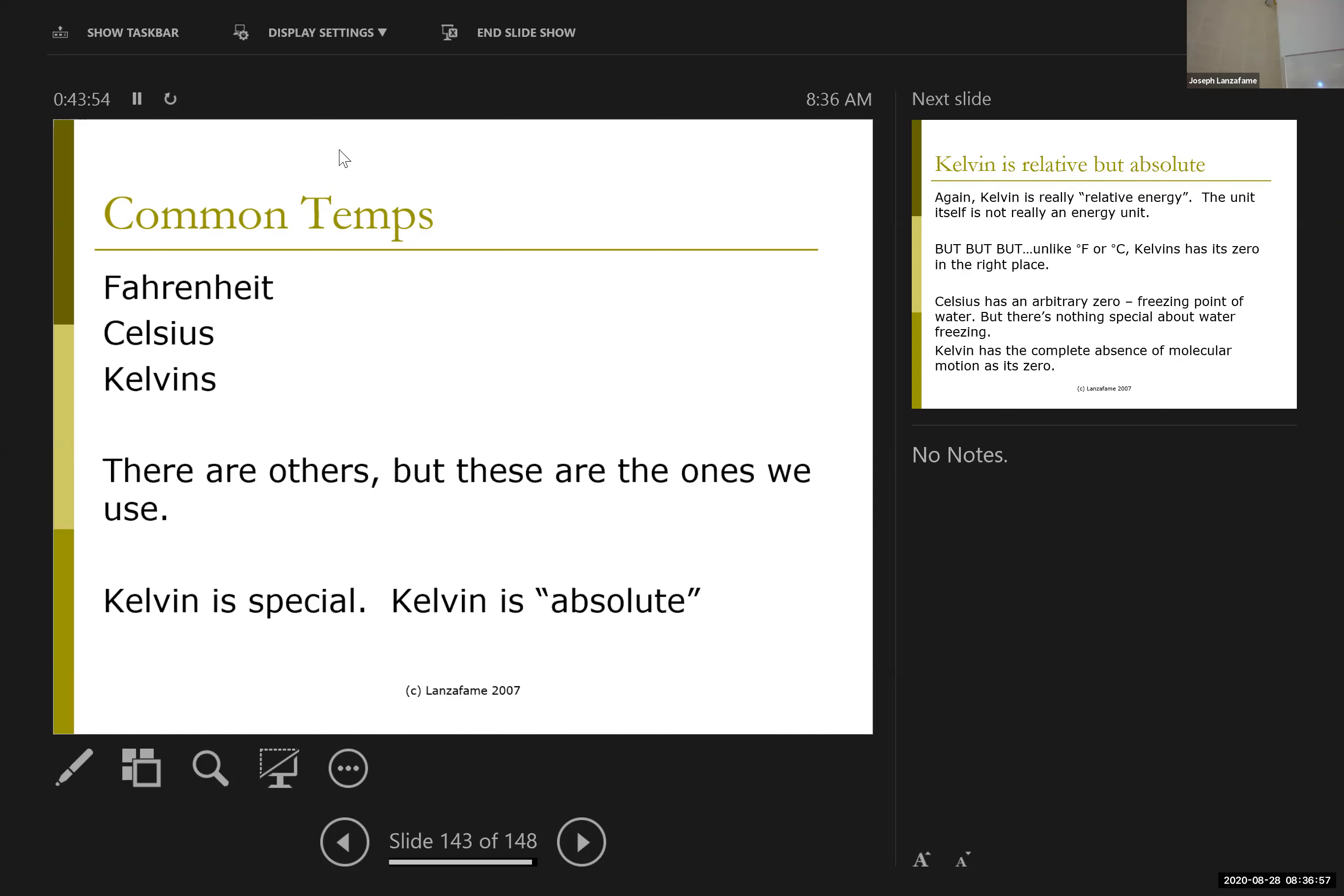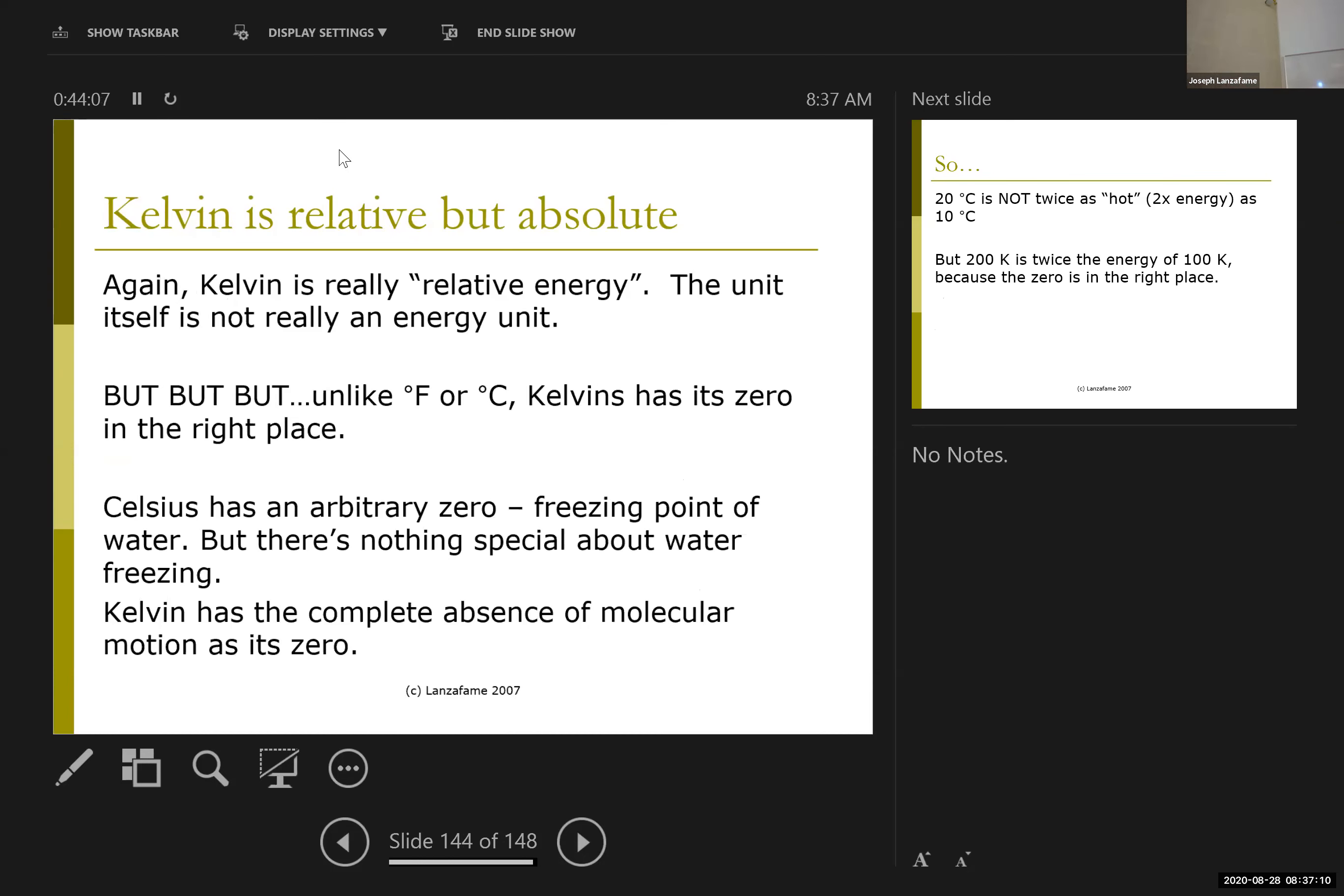And the only thing Kelvin has going for it, the Fahrenheit or Celsius does not, is it has the zero in a right place. I almost don't want to say there's an absolute zero for all forms of energy. But in terms of kinetic energy of the molecules, which is what I'm using my temperature for, the thing about Kelvins is that its zero corresponds to zero molecular motion. So in terms of the kinetic energy of the molecules, Kelvins has the zero in the right place.